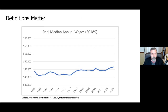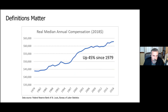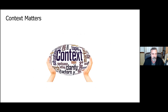Definitions matter. Politicians often say median wages haven't grown over time — and looking at wages alone, the picture looks flat. But workers aren't paid just wages; they're paid compensation, which is a combination of wages and employer-paid benefits. If you look at the correct definition — total compensation adjusted for inflation — worker compensation is actually up 45% since 1970. What you're measuring matters enormously.